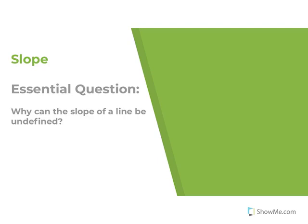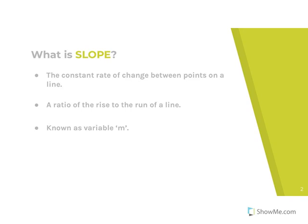Hi everyone, today we're going to be learning about slope. Your essential question for today is why can the slope of a line be undefined? Slope is the constant rate of change between points on a line. Slope is also a ratio of the rise to the run of a line, and slope is also known as the variable m.